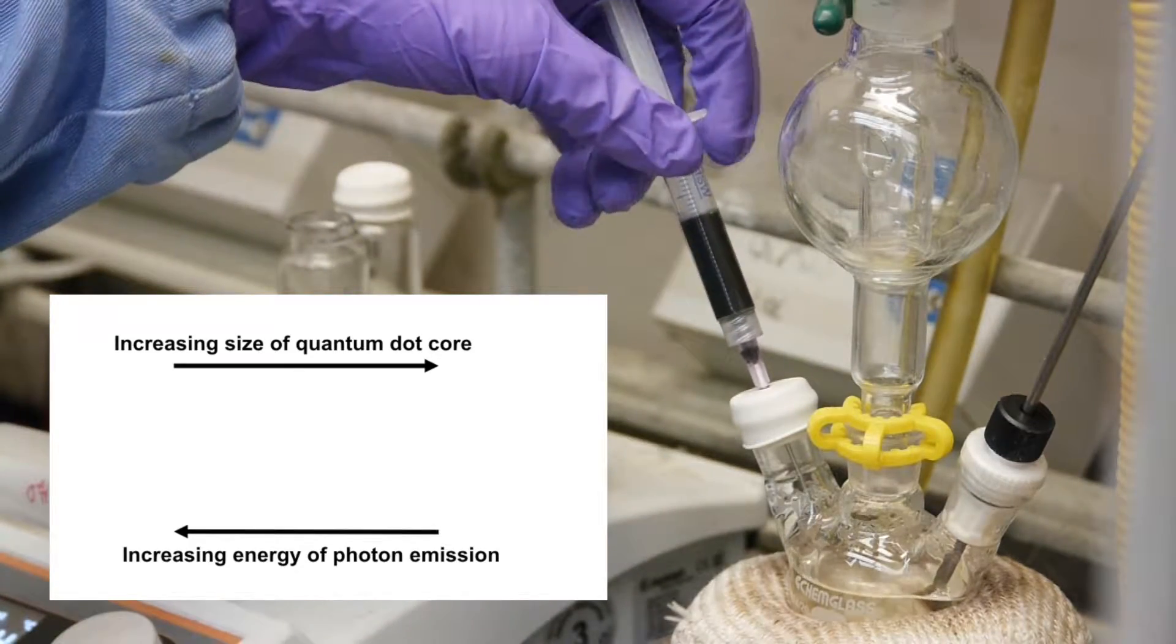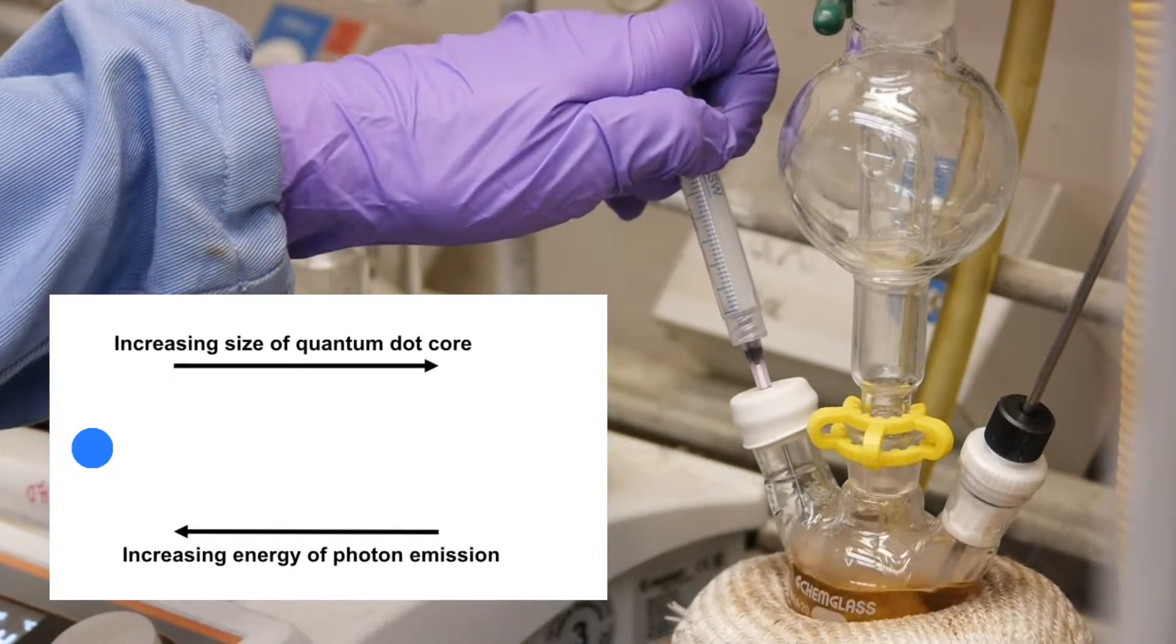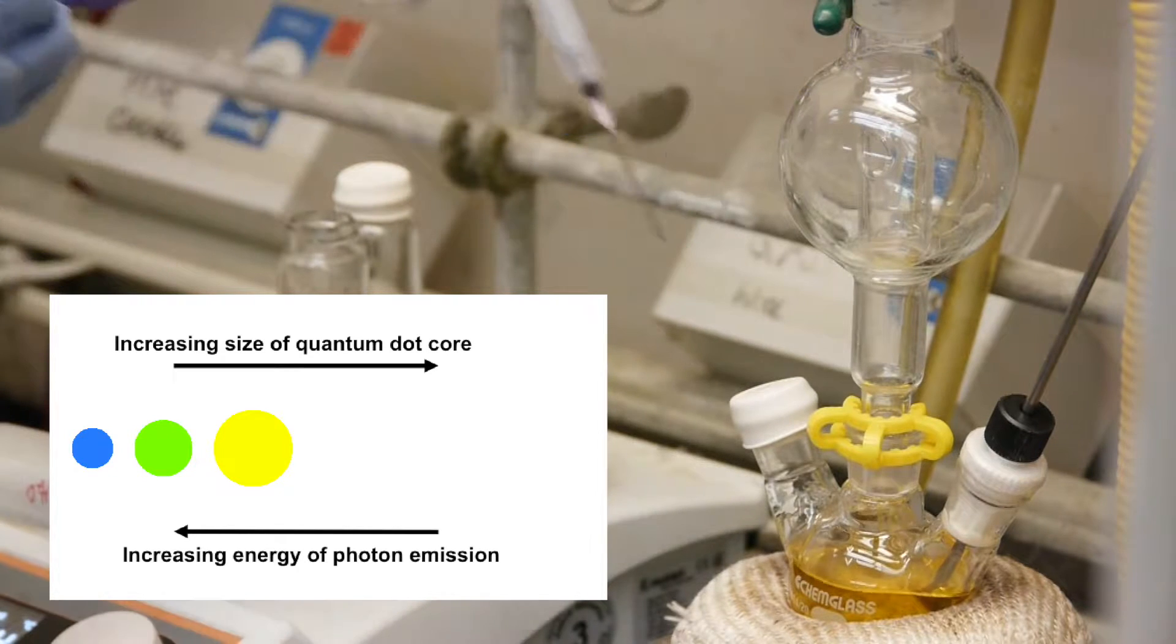Typical quantum dots are 2 to 10 nanometers in diameter, and with different core sizes, they can absorb and emit photons of different energies and colors.